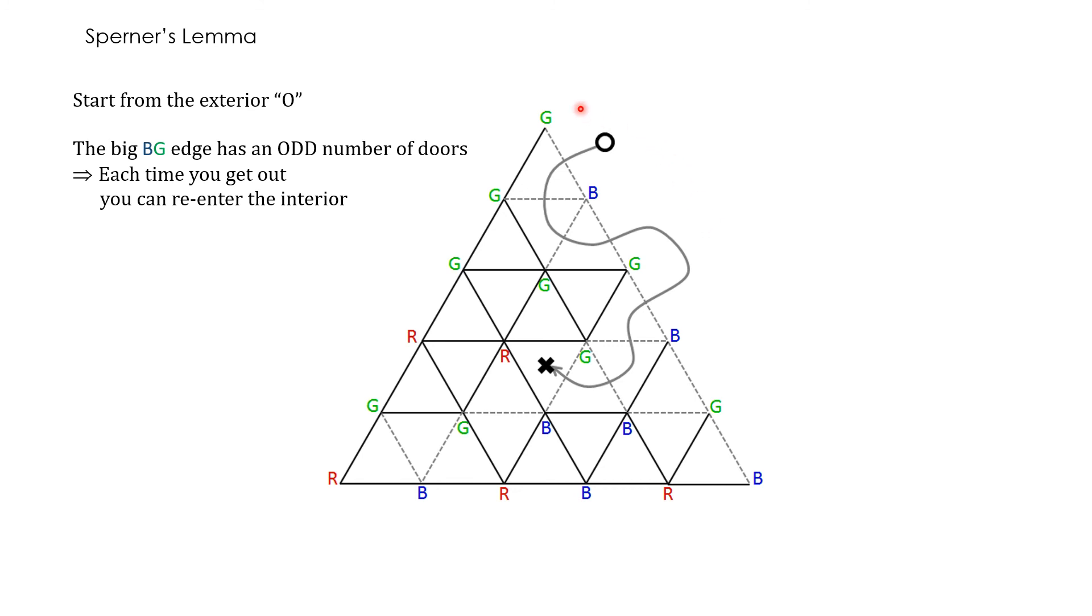Now, note that the big GB edge here has an odd number of doors. Since there are an odd number of doors, once you step inside, you exhaust a door, you use that door. And so you have an even number of doors left when you're inside. And then when you step back outside, you again have an odd number of doors left. So each time you get out, you can always re-enter.